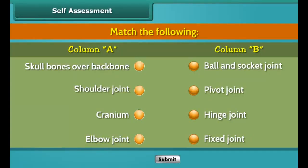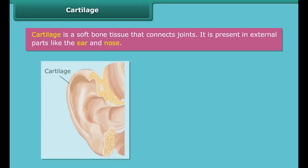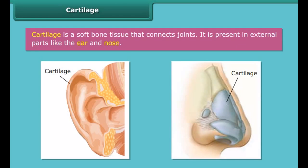Cartilage is a soft bone tissue that connects joints. It is present in external parts like the ear and nose. A band or bundle of fibrous tissue in a human or animal body that has the ability to contract, producing movement in or maintaining the position of parts of the body, is known as muscles. The movement of the body is controlled by alternate contractions and relaxations of two sets of muscles.